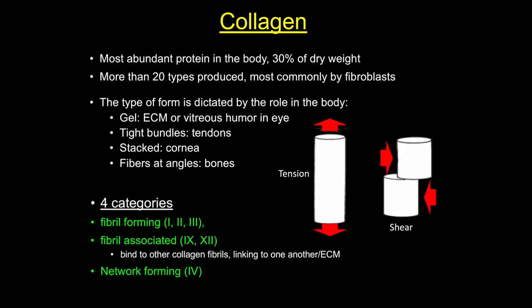The third category, network-forming or sheet-forming collagens such as type 4, have subunits produced by epithelial cells. These are major proteins of extracellular and basal lamina, functioning to provide support and allow for filtration. Finally, linking and anchoring collagens are short collagens that link fibrillar collagens to one another, helping them form larger fibers.